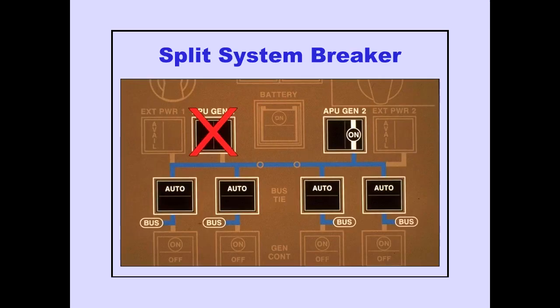If one of the APU generators or external sources is disconnected or fails, the split system breaker closes, maintaining power to the entire synchronous bus.